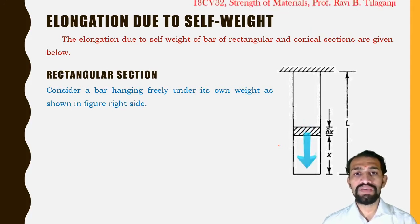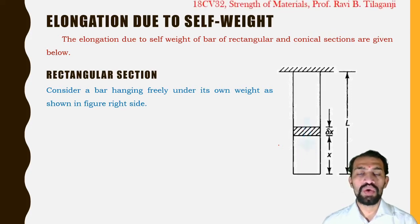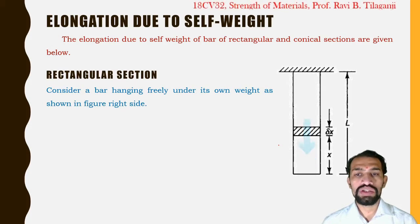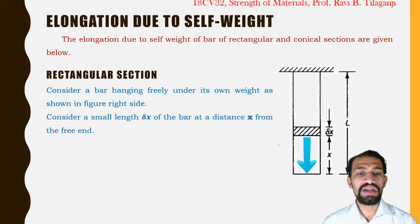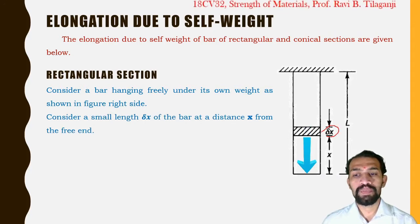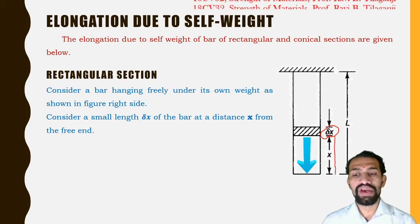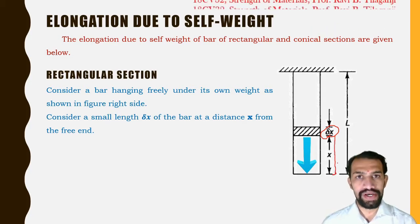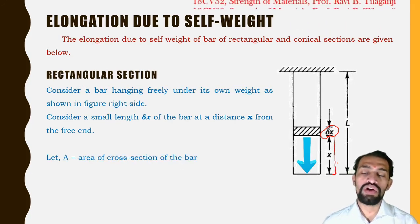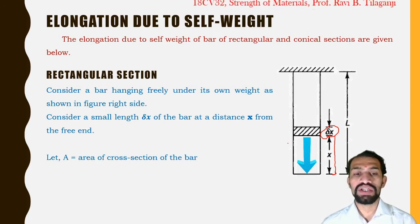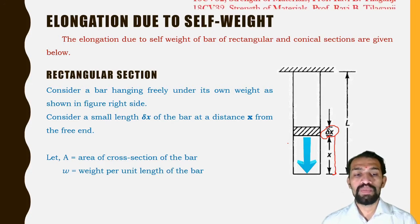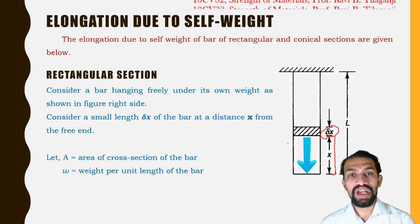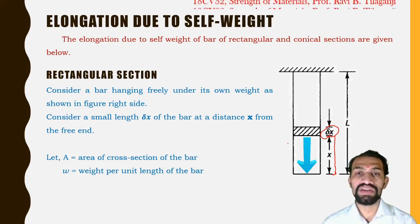The weight acts in the downward direction. We consider a small length delta x at a distance x from the free end. Let A equal the area of cross section of the bar. Let small w be the weight per unit length of the bar — for one meter of length, whatever the weight, that is considered as small w.